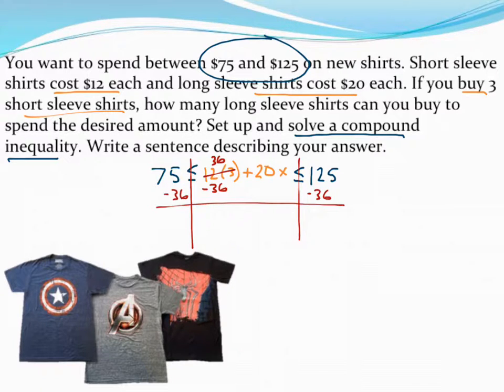So then what I'm left with on the left-hand side is going to be 39. And then carry that inequality symbol straight down. I didn't divide by a negative, so nothing has to be flipped. All that's left in the middle is the 20x. And then that needs to be less than or equal to 89 over here.